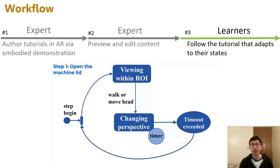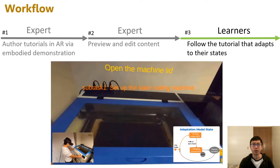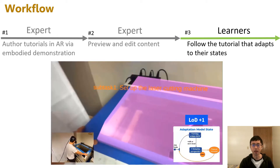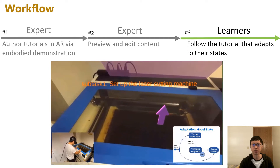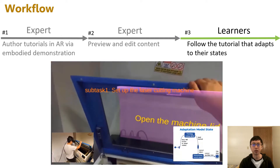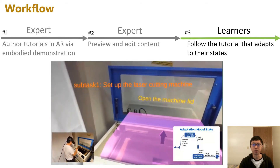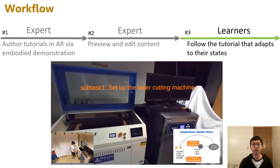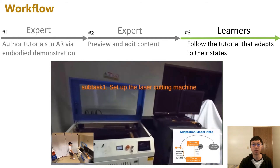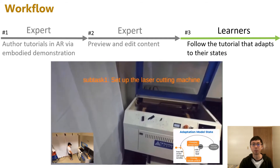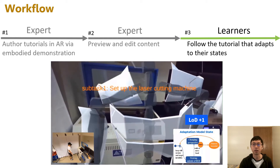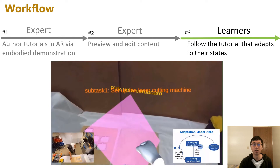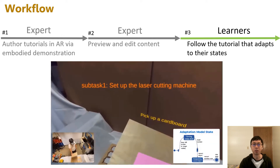We built an adaptation model based on deep learning and a finite state machine to adjust the level of detail. First, the learner should open the machine lid. The current level of detail is four. The system detects that the learner is stuck and increases the level of detail to four so that an additional animated component appears. Now the system detects the correct operation and adjusts the level of detail to three for this step and all other similar operations. The next operation is picking up the cardboard. The system recognizes that the learner is not paying attention to the target and increases the level of detail from four to five to bring out the AR avatar. Following the avatar, the learner finds the cardboard and picks it up.